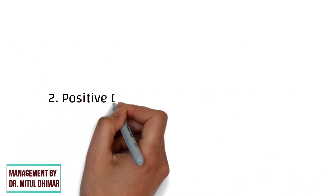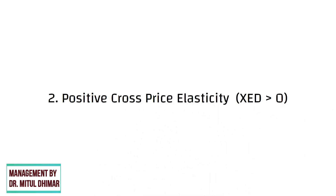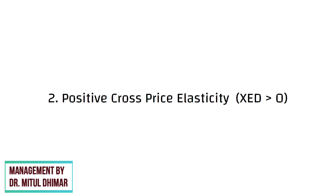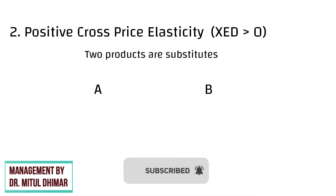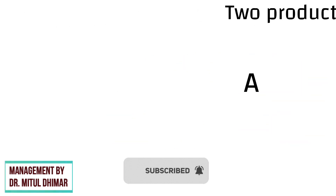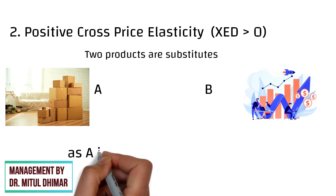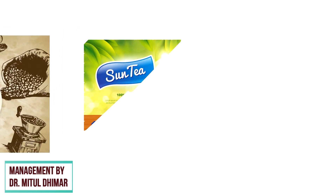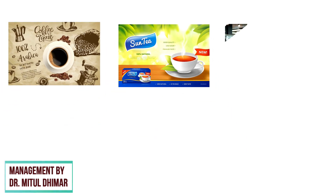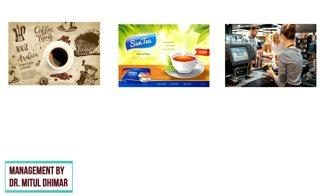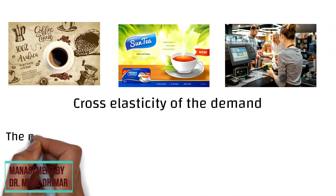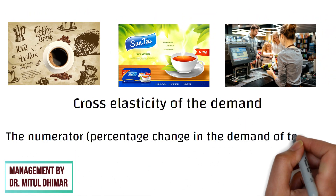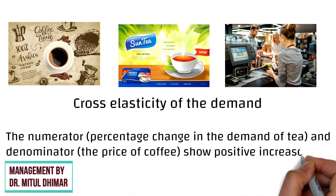Positive cross price elasticity is where the substitute cross elasticity of demand is more than zero. A positive cross elasticity denotes two products that are substitutes. If products A and B are substitutes, an increase in the price of B leads to an increase in the quantity demanded for A, as A is used as an alternate for B. For example, if the price of coffee increases, the quantity demanded for tea — a substitute beverage — increases as consumers switch to a less expensive yet substitutable alternative. This is reflected in the cross elasticity of demand formula, as both the numerator (percentage change in demand of tea) and denominator (price of coffee) show positive increases.